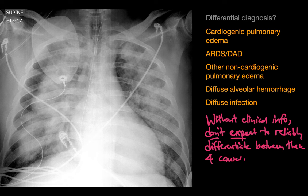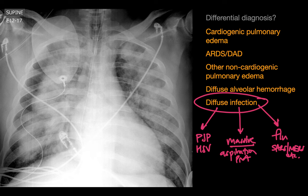With regards to lung infections presenting as diffuse bilateral consolidation, these can be divided into three buckets. Bucket one: immunosuppressed patients — think PJP and HSV pneumonia. Bucket two: aspiration-risk patients — think massive aspiration pneumonia. Bucket three: viral epidemics or pandemics — good examples being influenza, SARS, and MERS. Not all viral epidemics present diffusely; COVID, for example, tends to present in a more multifocal bilateral peripheral lower lung distribution.